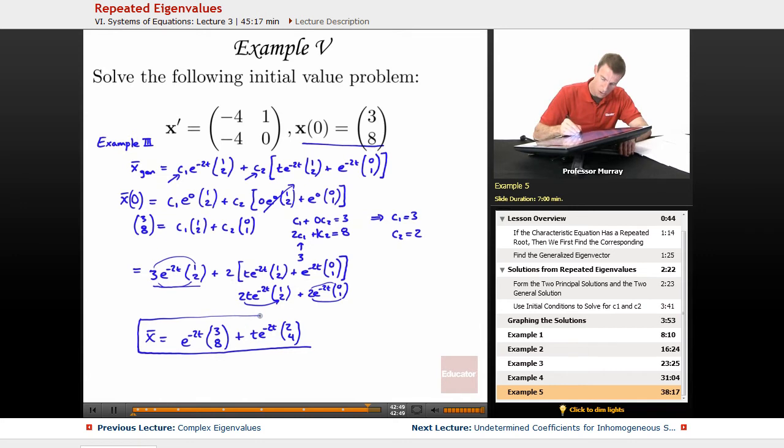By the way, notice that it's very easy to check now. If I plugged in t = 0, the right-hand side would all go to 0, and the left-hand term would give me (3, 8). That's what it was supposed to be, so I can check that I've got it right. Let me recap what we did there.